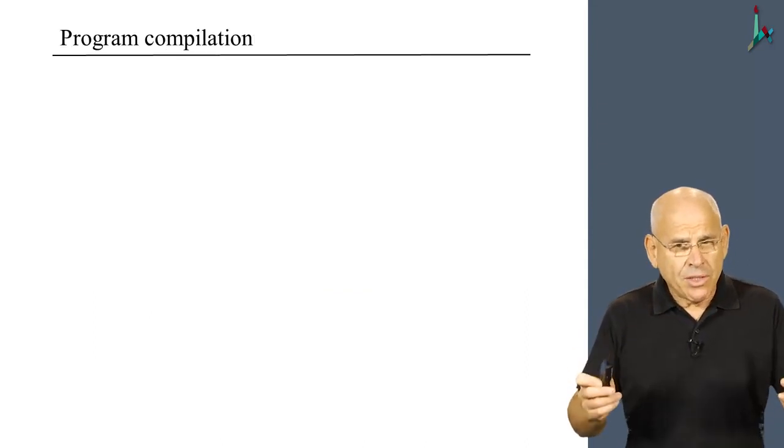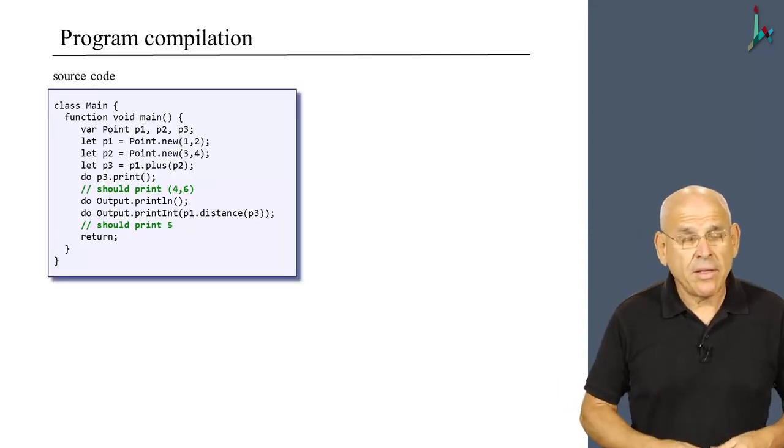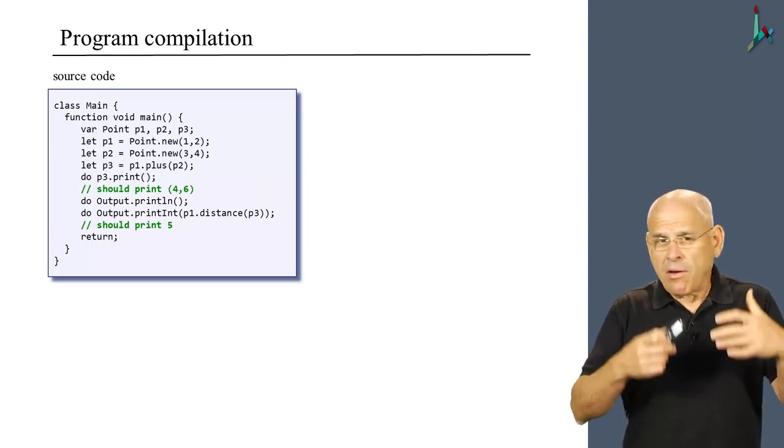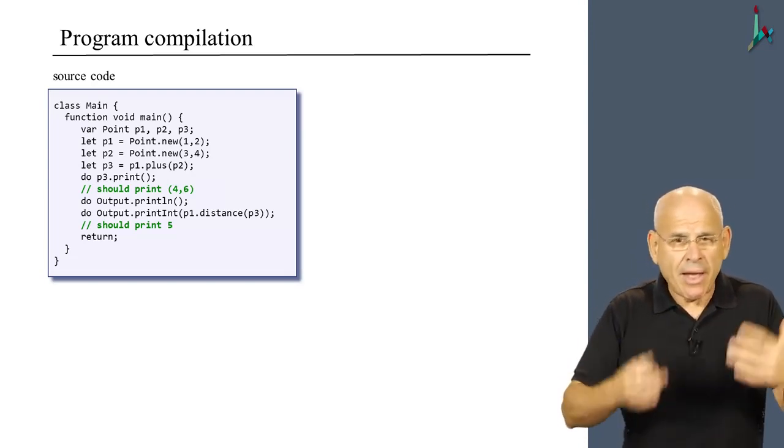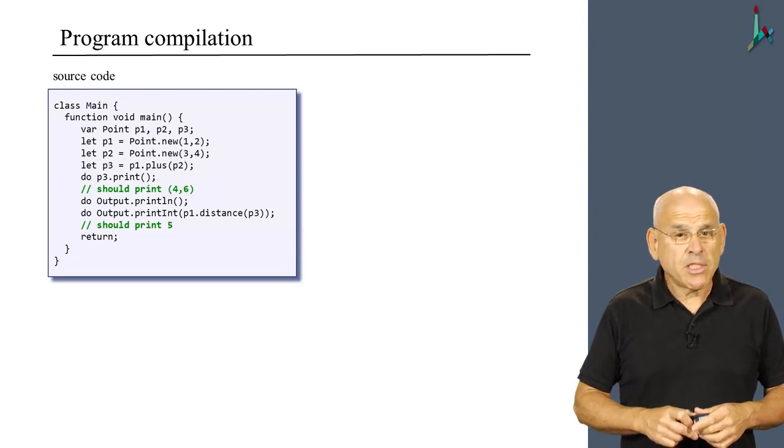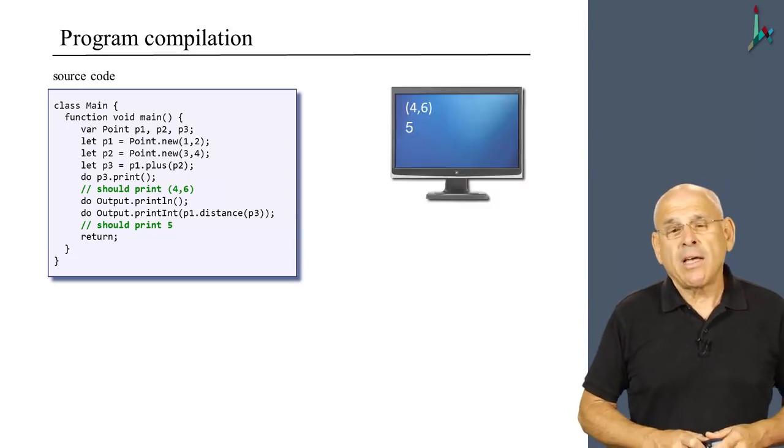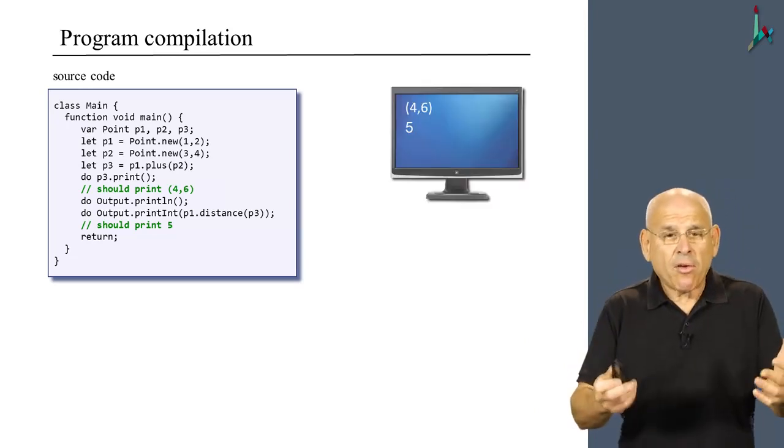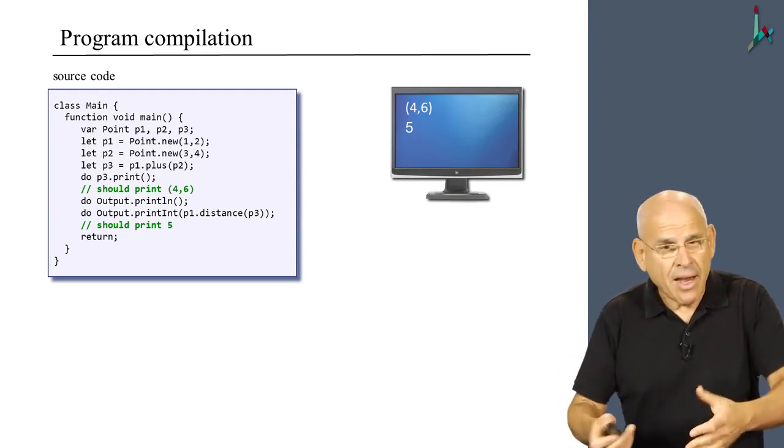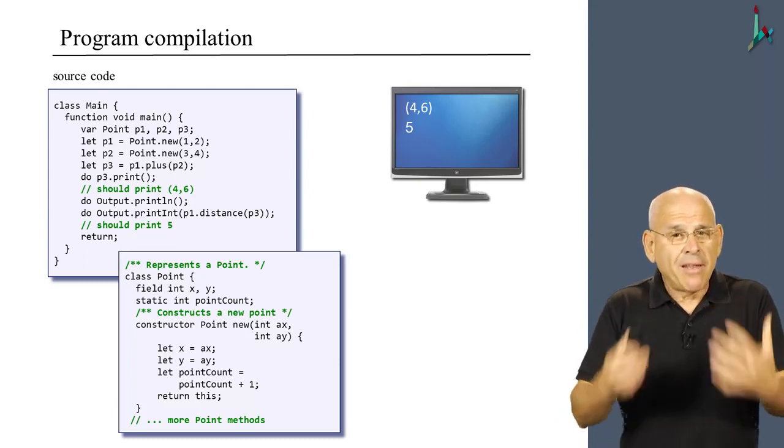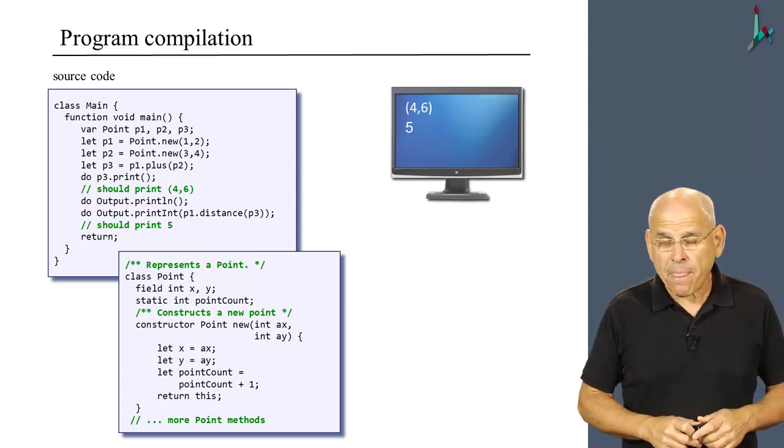Now, when we say program compilation in this course, we talk about a language which is high-level and object-oriented, the Jack language. And here's an example of some code segment that you've seen before, that is designed to manipulate some points on a two-dimensional space. If you compile and execute this code, you'll end up seeing some nice results on the screen. And as we discussed before, in order for this code to work properly, it has to interact with yet another class file that delivers the point functionality, so to speak, the point class file.